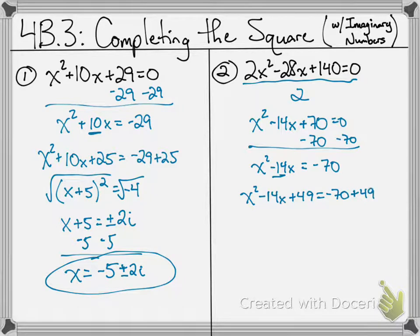Again, my next step, take a look at the left side. It's a trinomial that will factor apart. Multiplies to 49, adds to negative 14, negative 7, negative 7. So my factoring would be x minus 7 squared because I'd have the same factor twice. Equals, add that up on the right side, you get negative 21.